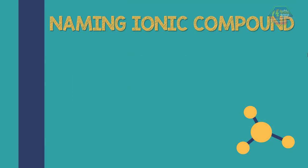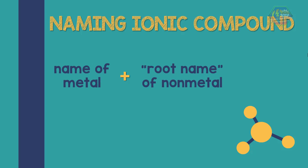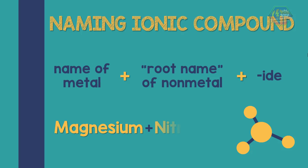In naming an ionic compound, it is the combination of the name of the metal plus the root name of the non-metal, and it ends with -ide. For example, if we pair magnesium and nitrogen, we have an ionic compound named magnesium nitride.